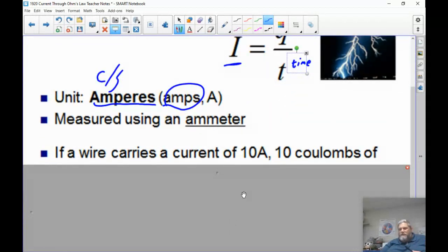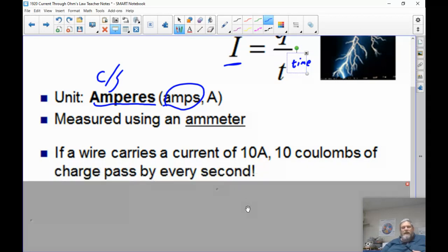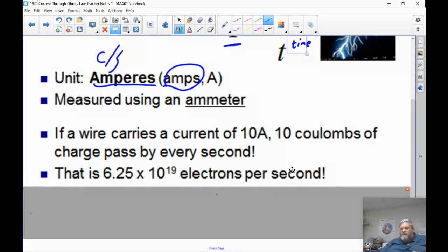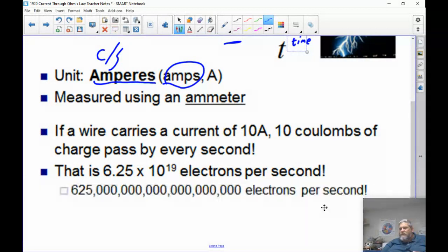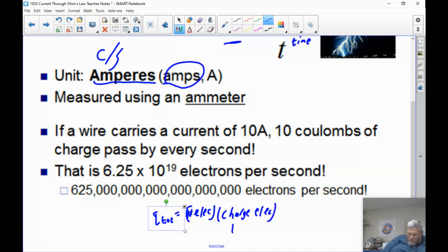If a wire carries 10 amps, that means there's 10 coulombs of charge passed by every second. And 10 coulombs is a lot of charge. In fact, that turns out to be 6.25 times 10 to the 19th electrons every second. And to get that, just to remind you because you may have to do this on a problem later on, remember we say that Q total is the number of electrons times the charge of an electron, the 1.6 times 10 to the negative 19. So we just take 10 coulombs and divide by 1.6 times 10 to the negative 19 to get that number of electrons. You might need to be able to do that for one of the problems on our practice sheet.